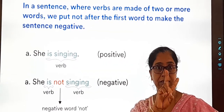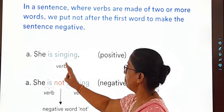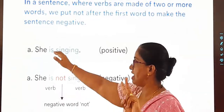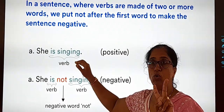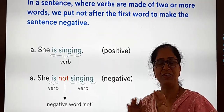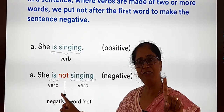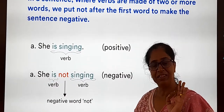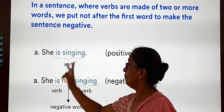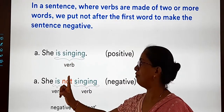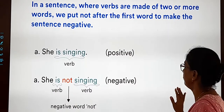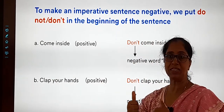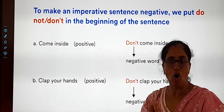But what if the verb is two words? For example, 'She is singing' — there are two verbs: a being verb and an action verb. Where do you place 'not'? No issues — immediately after the first verb: 'She is not singing'. The procedure is the same: if there are two verbs, put 'not' after the first verb.